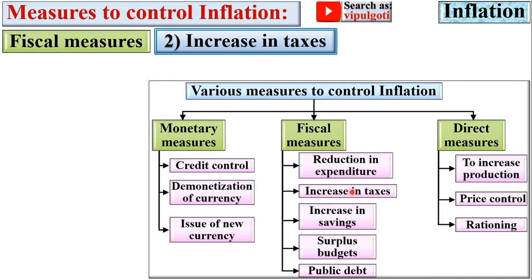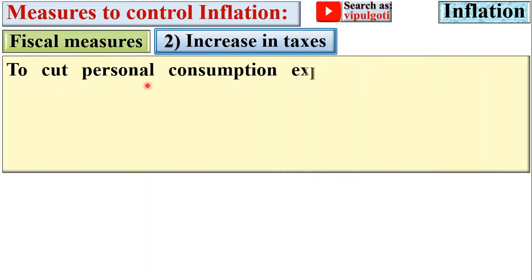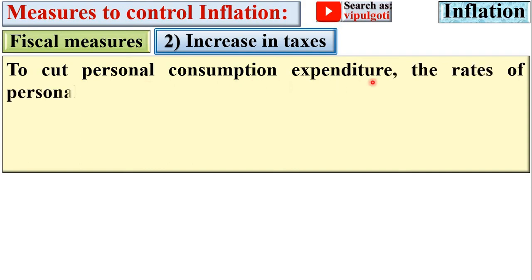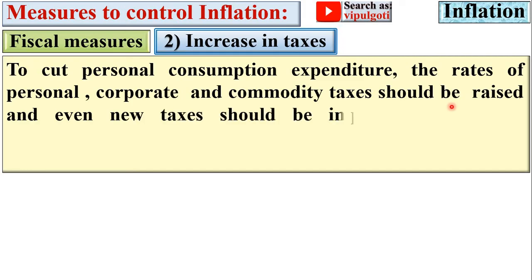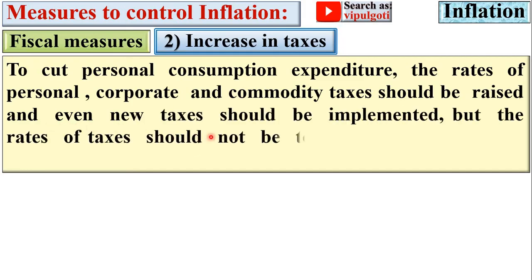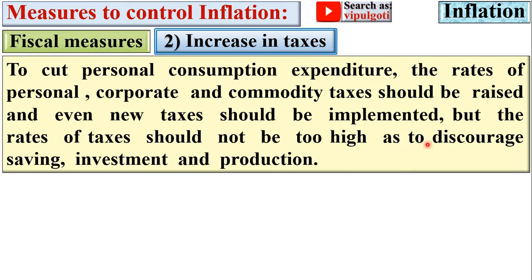Next: increase in taxes. To cut personal consumption expenditure, the rates of personal, corporate, and commodity taxes should be raised, and new taxes should be implemented. However, the rate of taxes should not be too high so as to discourage saving, investment, and production.